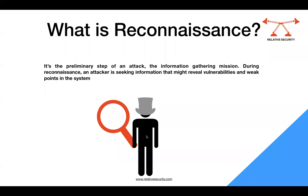An attacker wants to know as much as they can about your organization. If they are going to attack, they want to know what network ranges you are using, what machines and operating systems you have, whether you are regularly updating those systems, what business applications you are running, and any vulnerabilities associated with them. They will look for weaknesses exploited in your organization, check what ports are open, and identify any internet-facing machines they can target first.